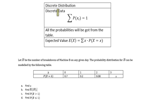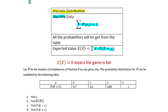This video is a review for discrete distribution. In discrete distribution, the data is discrete. The summation of the probabilities equals 1, and all probabilities will be obtained from the table. The expected value E of x equals the summation of x times the probability of the random variable equals x. When the expected value equals 0, the game is fair.